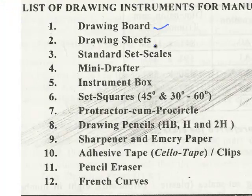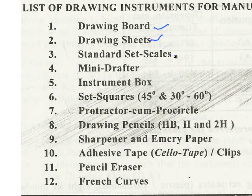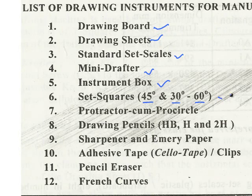A drawing board, drawing sheets, standard set squares, mini drafter, instrument box, set squares — 45 degrees, 30 degrees and 60 degrees ones — protractor, and compass-protractor circle.